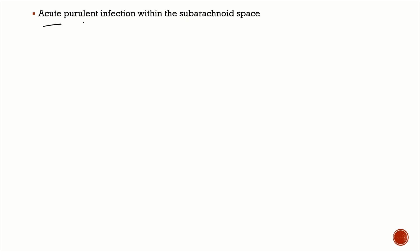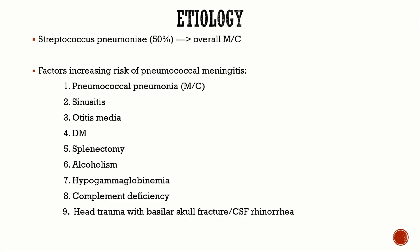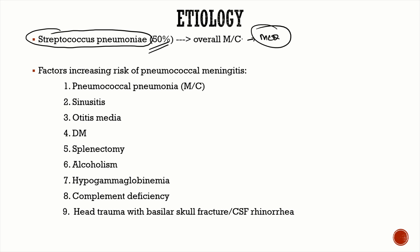Acute bacterial meningitis is an acute purulent infection within the subarachnoid space. The most important causative organism is pneumococcus — Streptococcus pneumoniae — which accounts for 50% of all bacterial meningitis. This is a very important MCQ: what is the most common cause of bacterial meningitis?